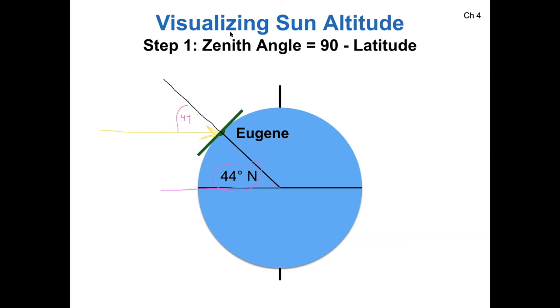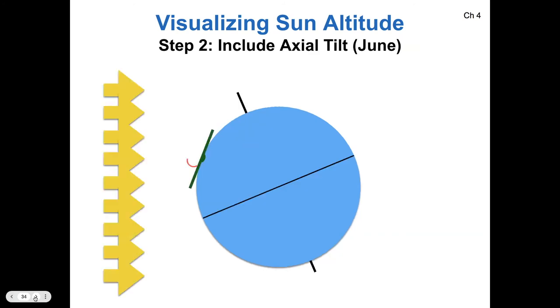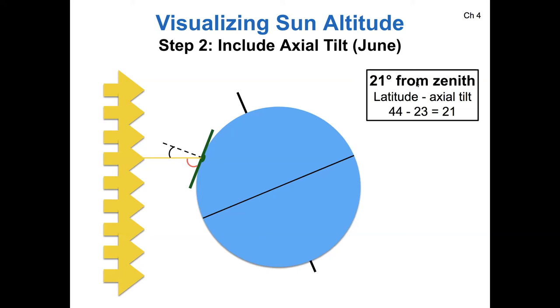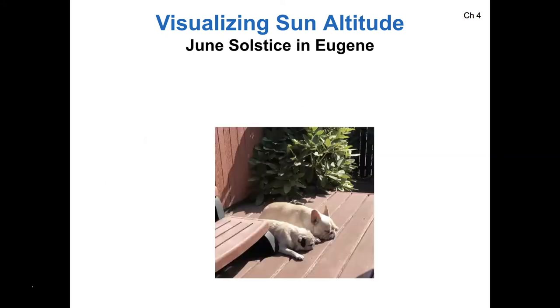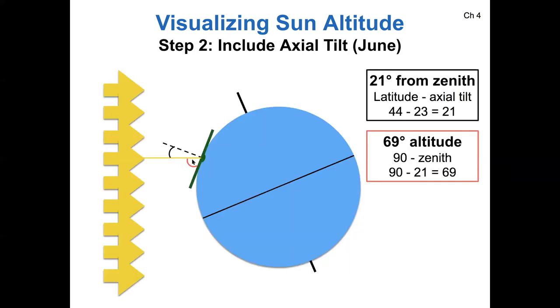But there is an axial tilt to consider as well. If we also consider the axial tilt, then that's going to take away from our angle. So now my zenith angle here is latitude minus the axial tilt. But the angle I've got shaded here in red, that's my solar altitude. That's because it's 90 degrees minus the zenith angle. It is 69 degrees.